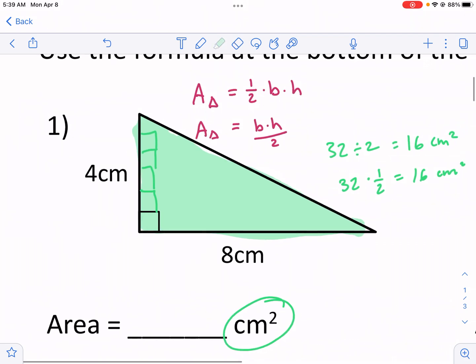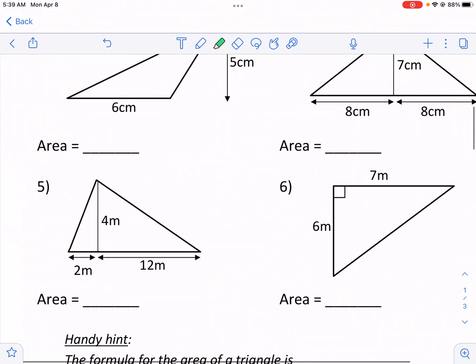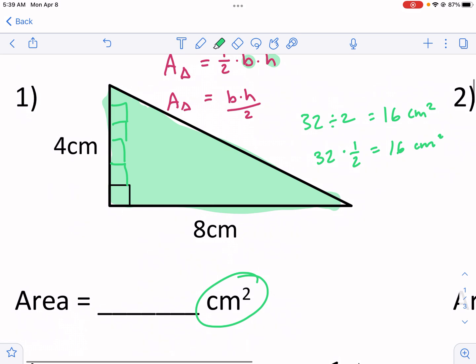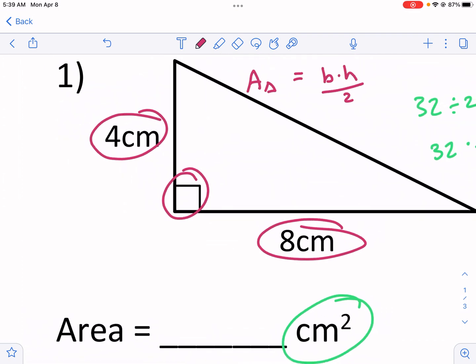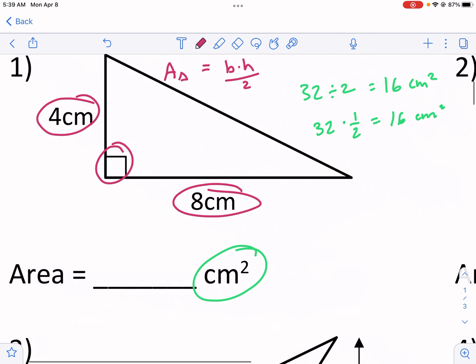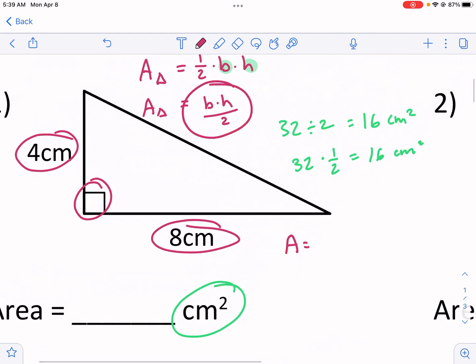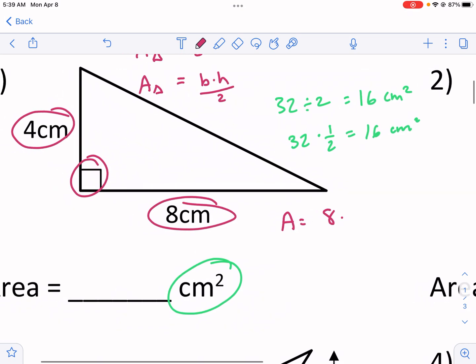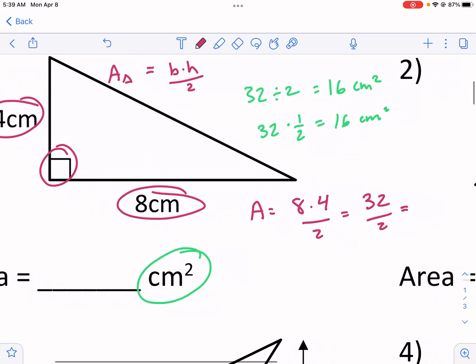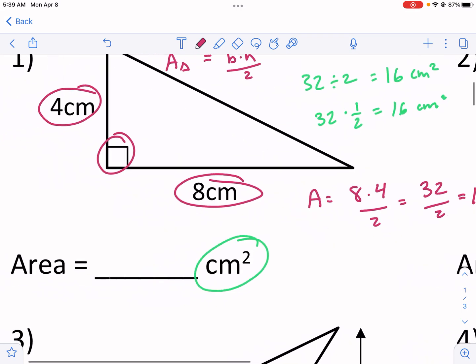So we just need to identify our base and our height in each one of these triangles. We're going to identify our base and our height, multiply those together, and then divide it by 2 or multiply by 1/2. In this case, our base and our height always needs to be perpendicular. It always has to have a 90 degree angle between our base and our height. So in this case, we can call our base 8 centimeters. So area equals—and I'm just going to use this second one right here—our base equals 8 centimeters, our height equals 4 centimeters, and we're going to divide that by 2. This is repetitive, but I'm just trying to emphasize here that this is the process we're going to use. So we're going to write 16 centimeters squared for our first one.